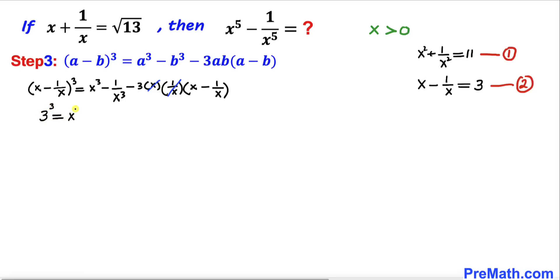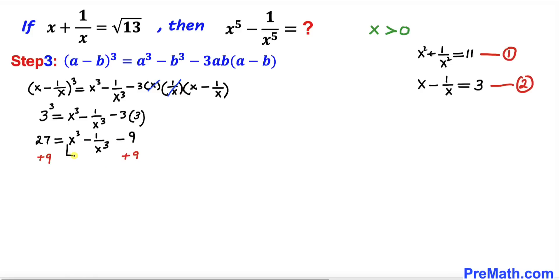So the left hand side becomes 3³. The equation becomes 27 equals x³ minus 1 over x³ minus 3 times 3, which is 9. Adding 9 to both sides to isolate x³ minus 1 over x³, the negative 9 and positive 9 cancel, so x³ minus 1 over x³ turns out to be equal to 27 plus 9, which is 36. Let's call this equation number 3.